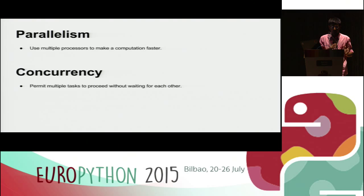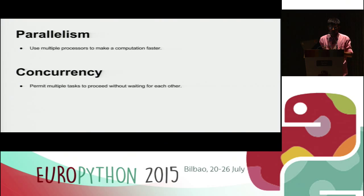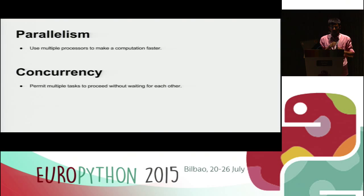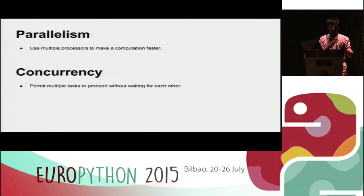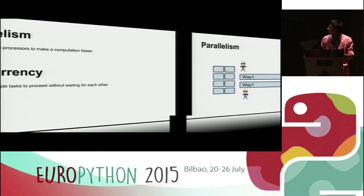Parallelism is about adding more processor cores — more CPU cores — to make computation faster. It is about adding workers, adding more cores to your task. Suppose you are executing some task or doing some computation — you are adding more cores, more processors, more workers into it to make it faster.